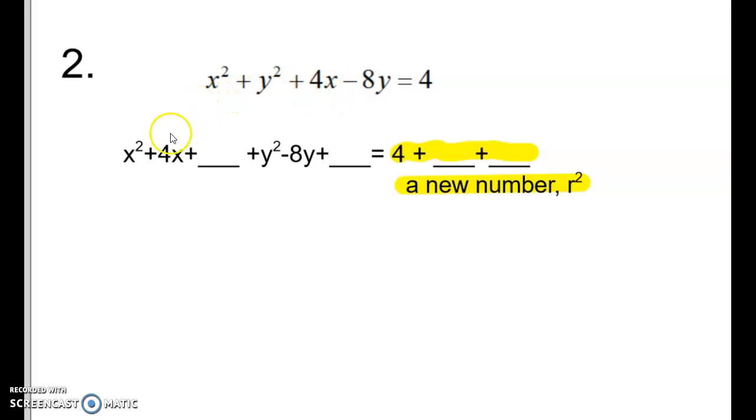Go to completing the squares on this. I put the x's together, I know I'm adding a blank. I put the y's together, I know I'm adding a blank, and I add my two blanks over here.